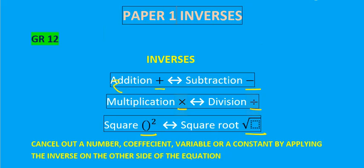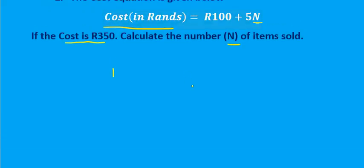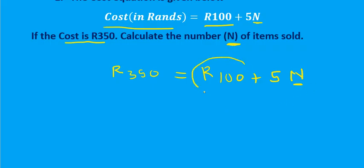So the cost in Rands, 350, is equal to 100 plus 5N. Remember we're trying to solve for N. This is what we have to find. We want to get rid of this 100. The 100 is being added.